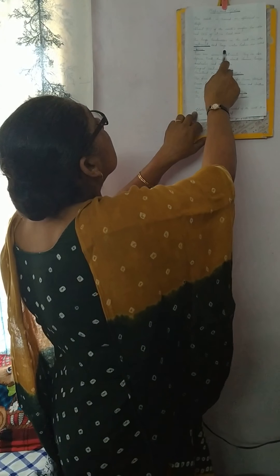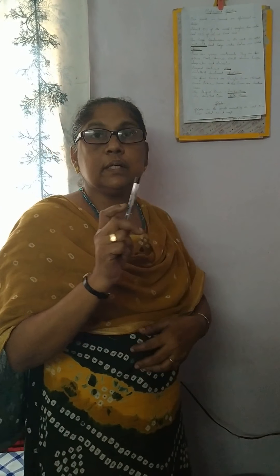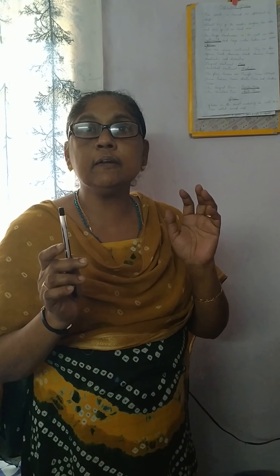The large land masses on the earth are called continents. Large water bodies are called oceans. There are seven continents and five oceans.